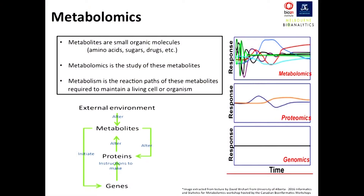Looking at metabolomics compared to the more well-known fields of proteomics and genomics: in response to any external stress, you'll get rapid changes in metabolomics information. At the same time, you'll get a slow change in proteomics, and in genomics virtually minimal changes. When I say a stressor, it can be something like eating, waking up, or exercise — metabolomics will give you information about all those different things and it's constantly changing.